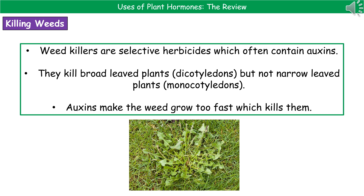The way they work is they will kill broadleaf plants, called dicotyledons, but not narrowleaf plants, the monocotyledons. So when you spread your weed killer across your lawn, anything like a dandelion — broadleafed — is going to die, but anything narrowleafed, like the grass itself, will not die. The reason it kills these weeds is that the auxin makes the weed grow too fast, and therefore it kills them.